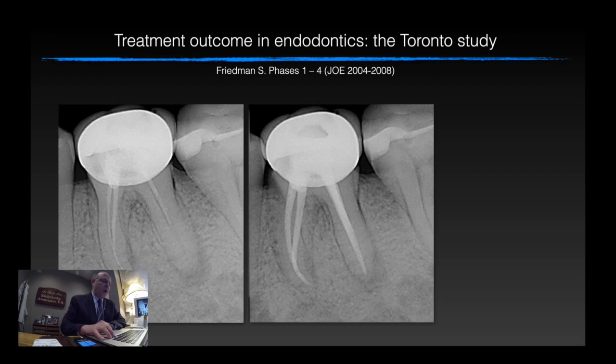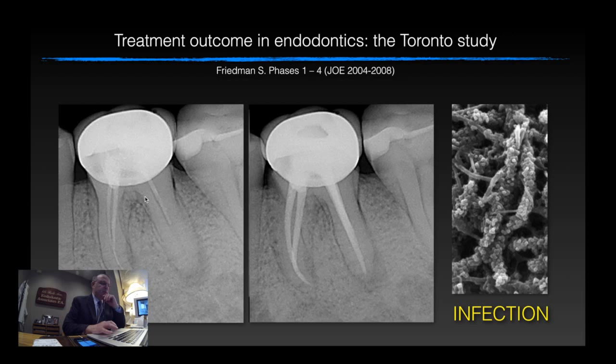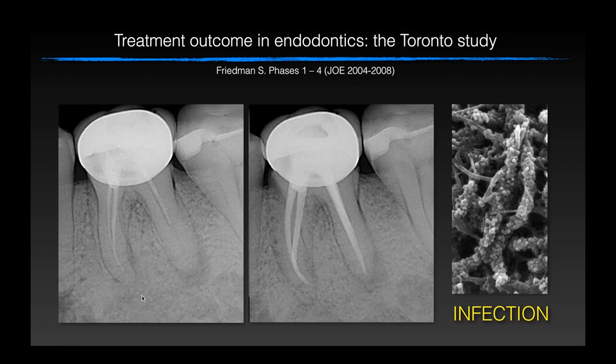If you go deep into these studies, you find nothing but infection. Look at this example here, similar to the one I just showed you — it's too short here. What's the problem of being too short? Well, this space here will harbor bacteria. It was originally necrotic to start with, and now the patient is having an acute exacerbation of that. It's infection — bacteria can survive here, away from the patient's immune system. It's infection. There's nothing else.